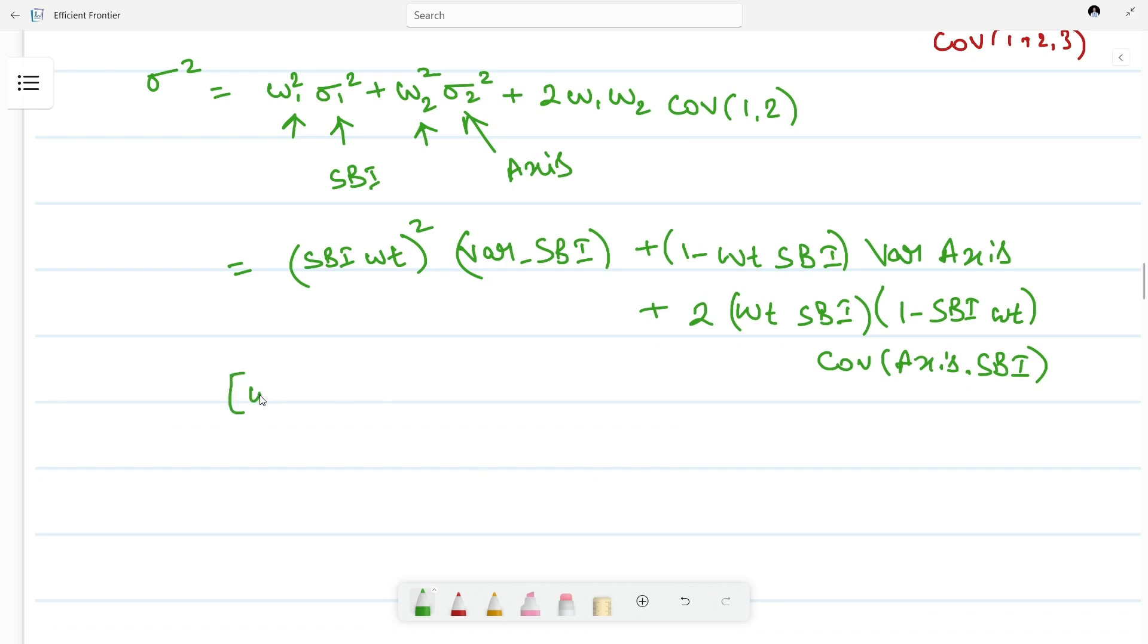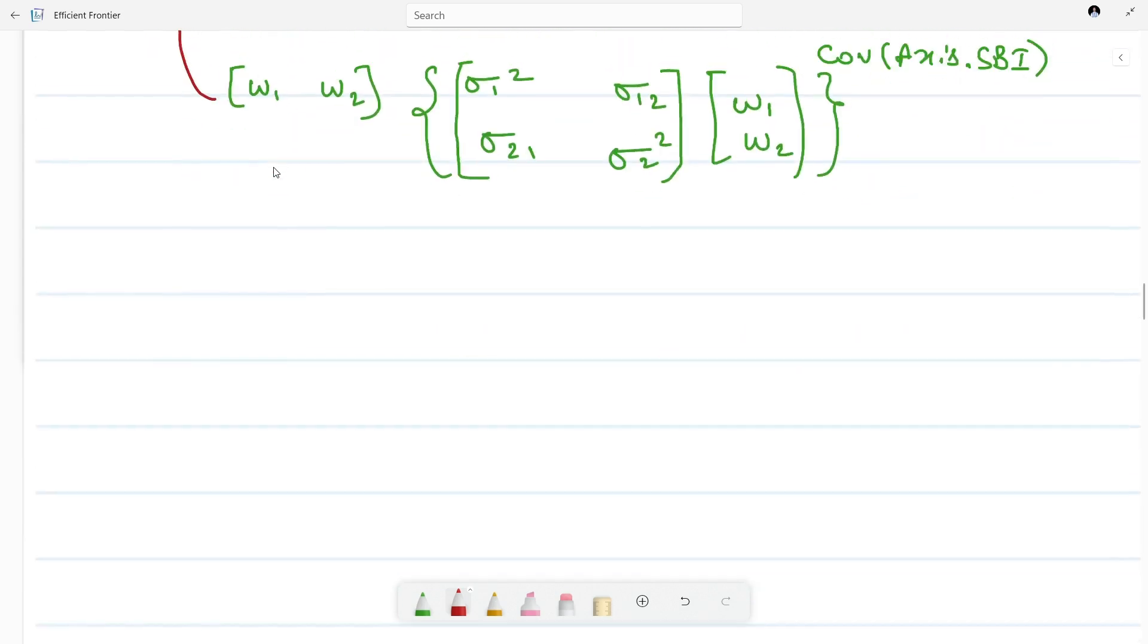So how we can write it? This is [W₁, W₂]. Then this is the matrix with σ₁² and σ₂,₁ in the first row, σ₁,₂ and σ₂² in the second row. Then multiply by [W₁, W₂] transpose. And if you observe carefully, these two are the same covariance terms.